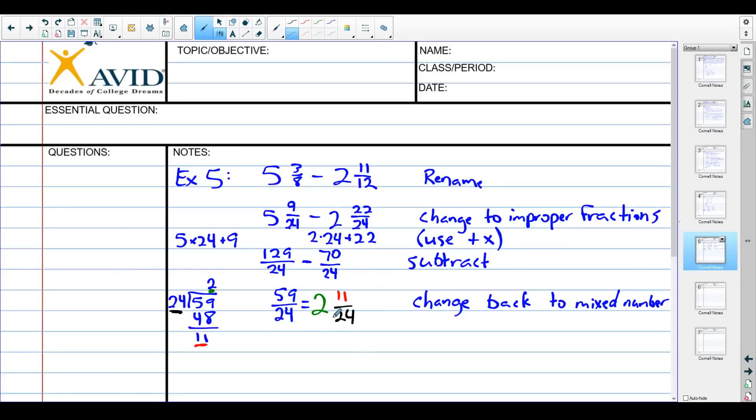So if you need to go from improper to mixed number, you can just divide, assuming you can't just do it in your head. So 5 and 3 eighths minus 2 and 11 twelfths is 2 and 11 twenty-fourths, which seems kind of coincidental because they look the same. It's just an accident that just happened.